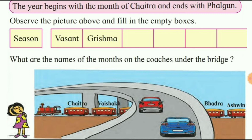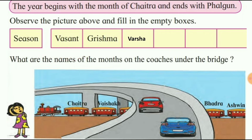In the Indian calendar, the year begins with the month of Chaitra and ends with Falgun. Observe the picture and fill in the empty box — seasons दिये हैं: वसंत, ग्रीष्म, वर्षा, शरद, हेमंत, शिशिर. उनके नाम आगे fill up करने हैं.